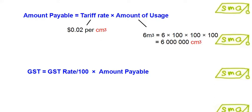Take note that if the tariff rate is in per cm3, we have to change the amount of usage which is in m3 to cm3. The units here must be the same.